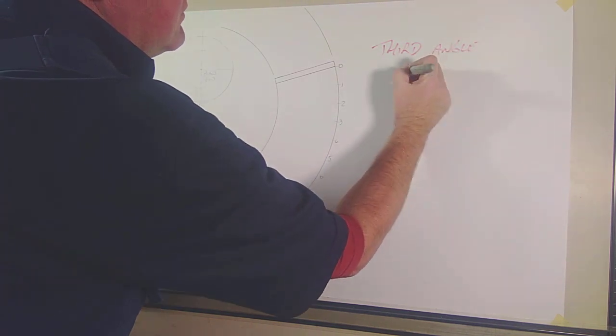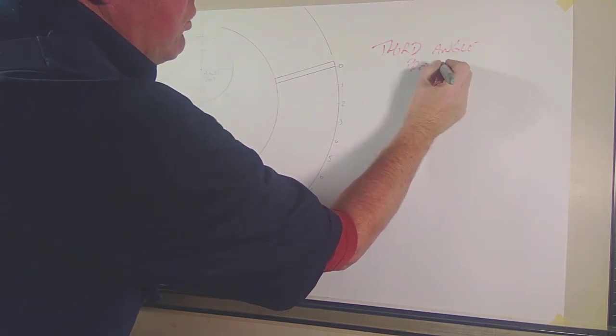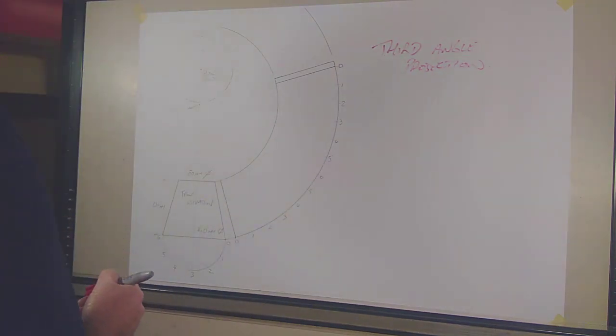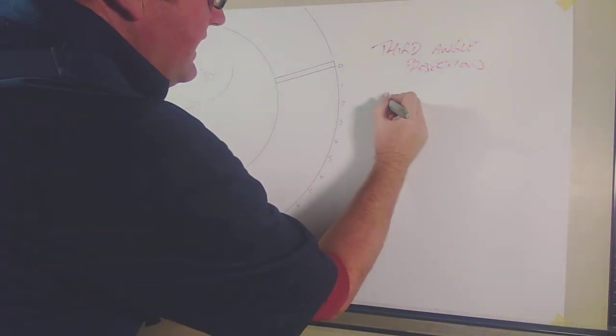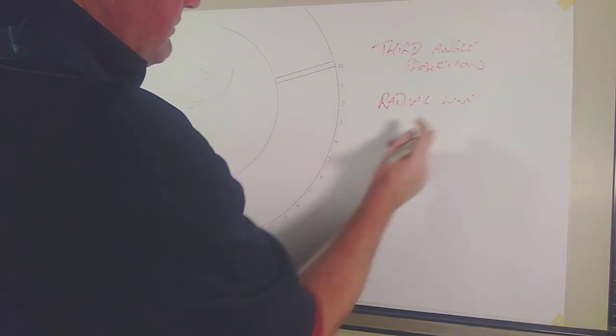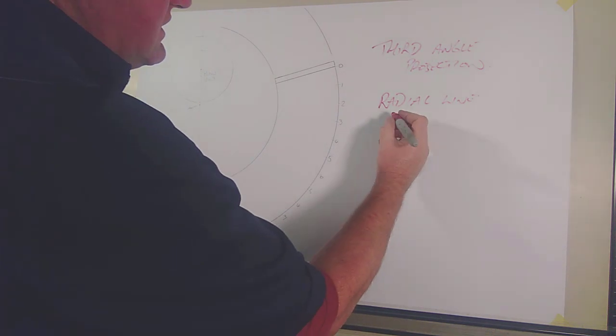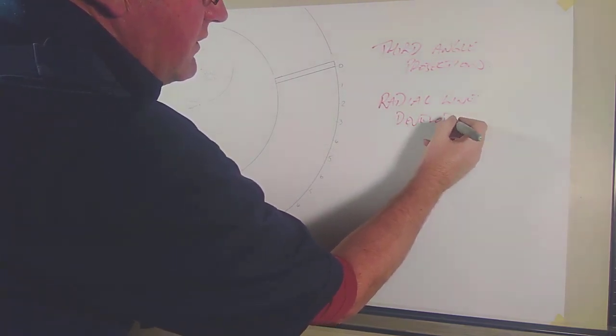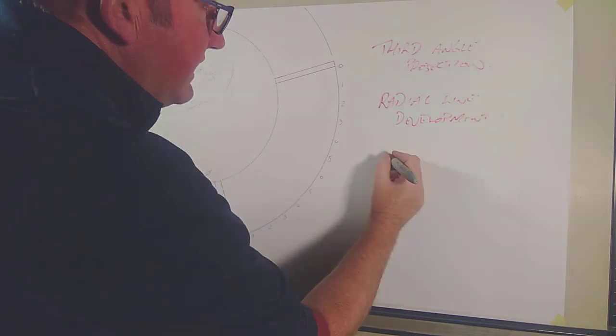So I draw it in third angle projection, that's what we use here in New Zealand. There is third angle and first angle. It was a radial line development, radial line development because everything is radiusing from the center apex. And it was a right cone.